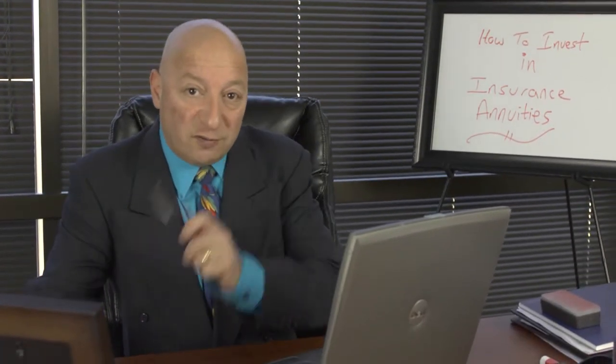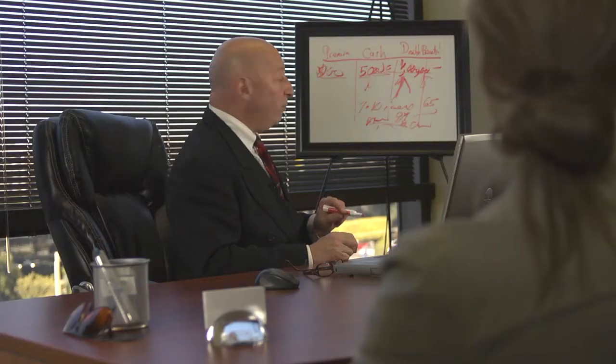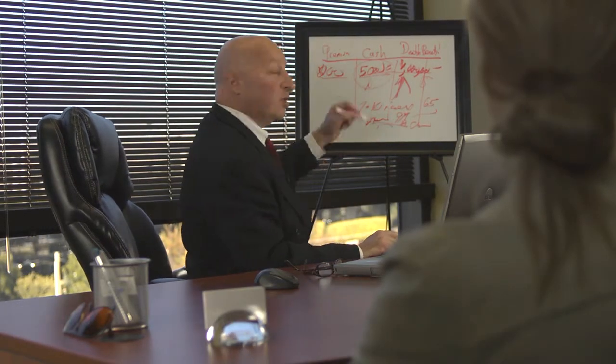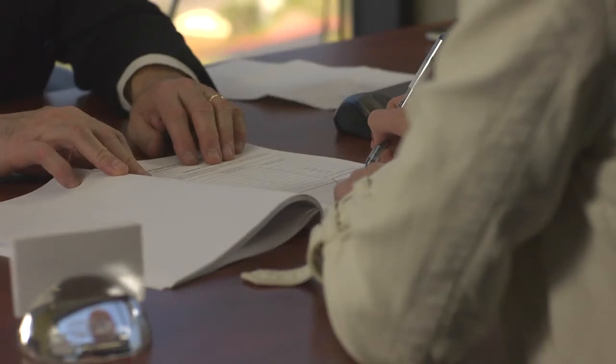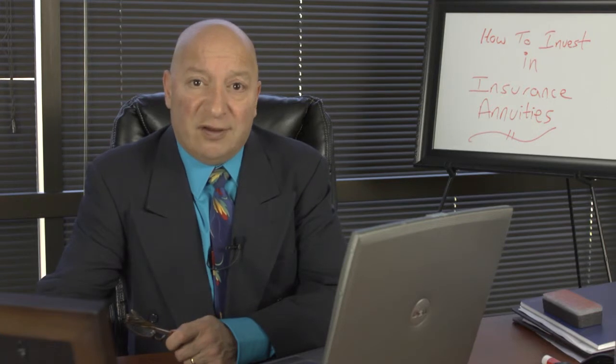Today's question is how to invest in insurance annuities. To buy an insurance annuity, you have to buy it from an insurance agent. So first and foremost, sit down with an insurance agent that you trust. In order for this agent to make recommendations about which annuity product is best for you, he or she will take you through a fact-finding process.